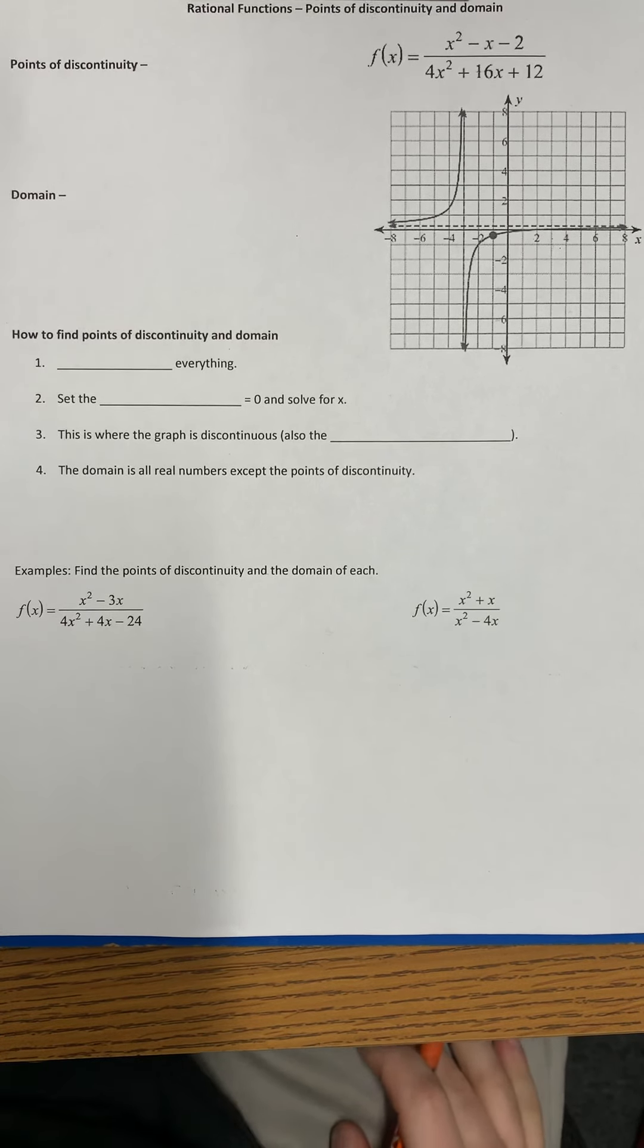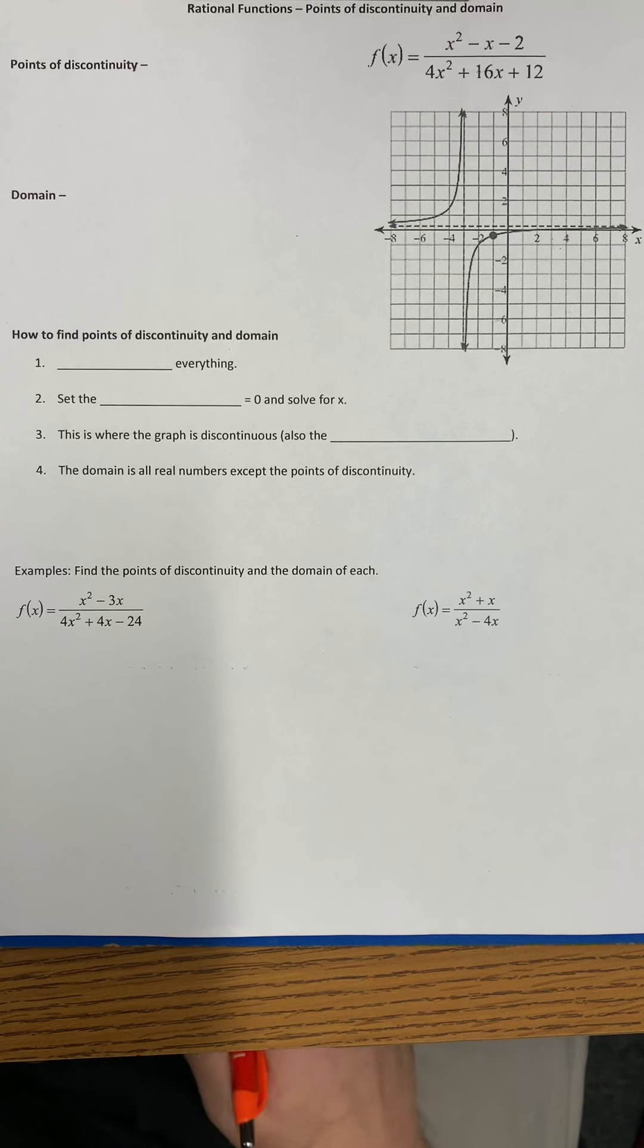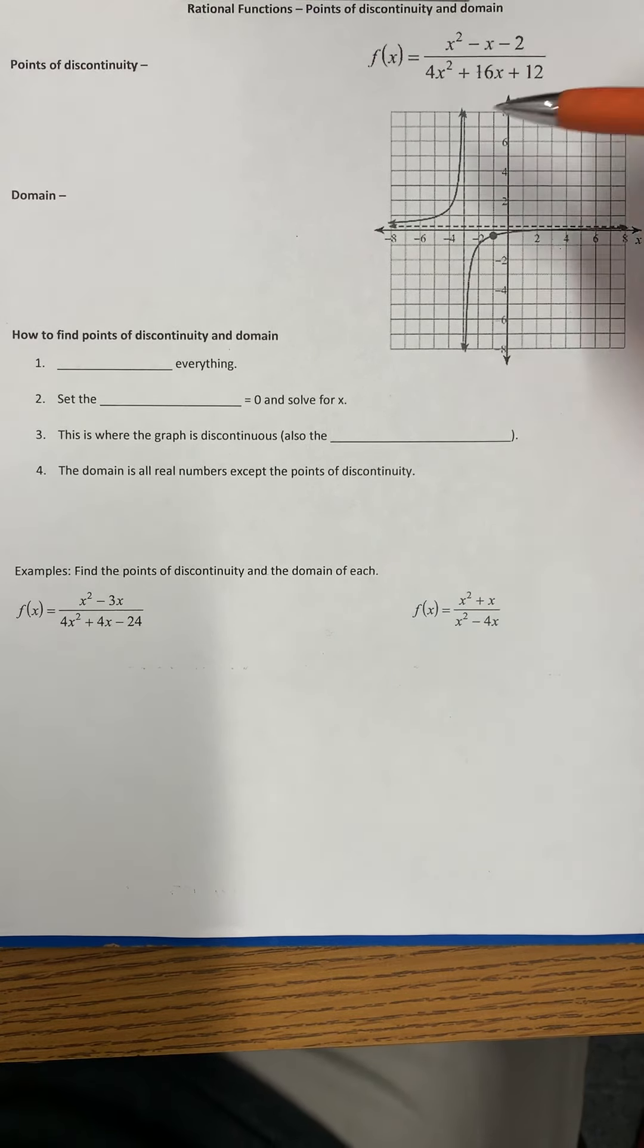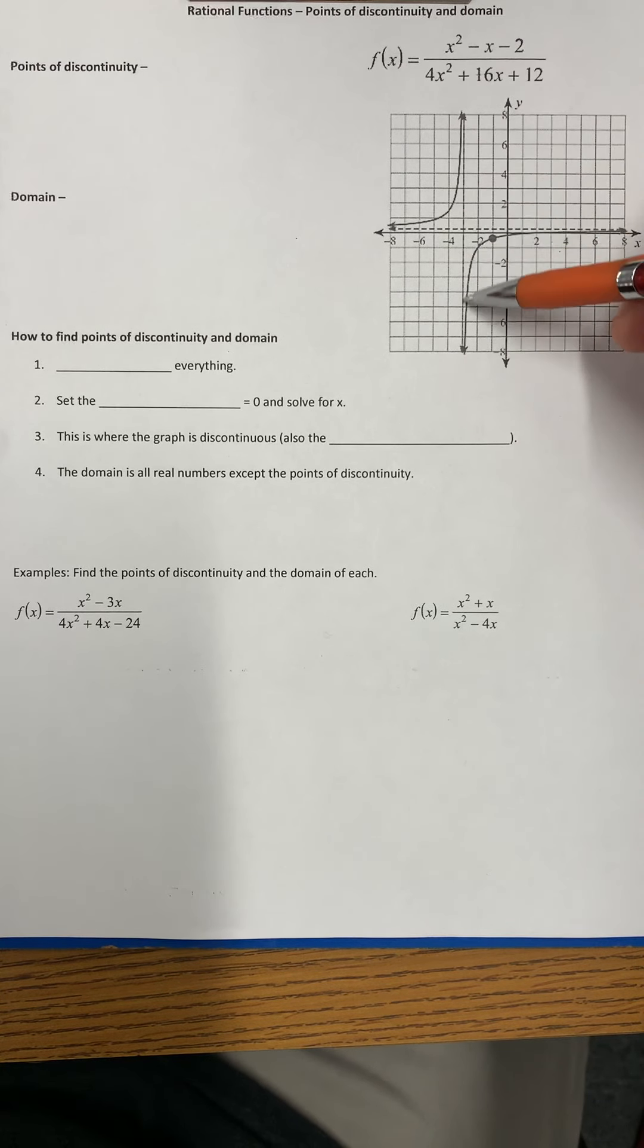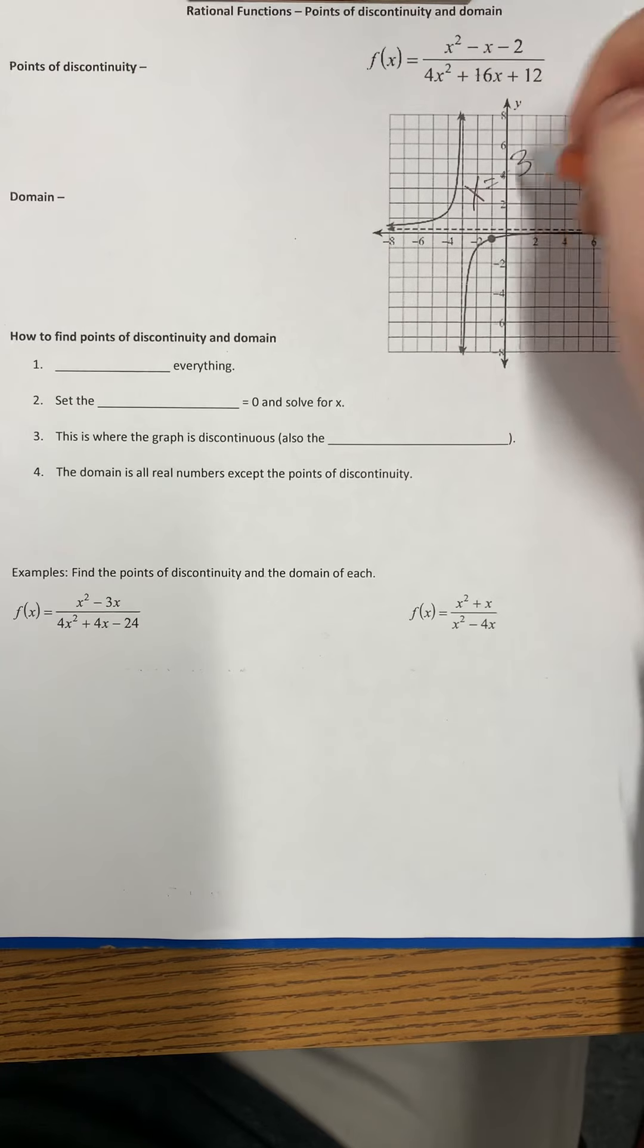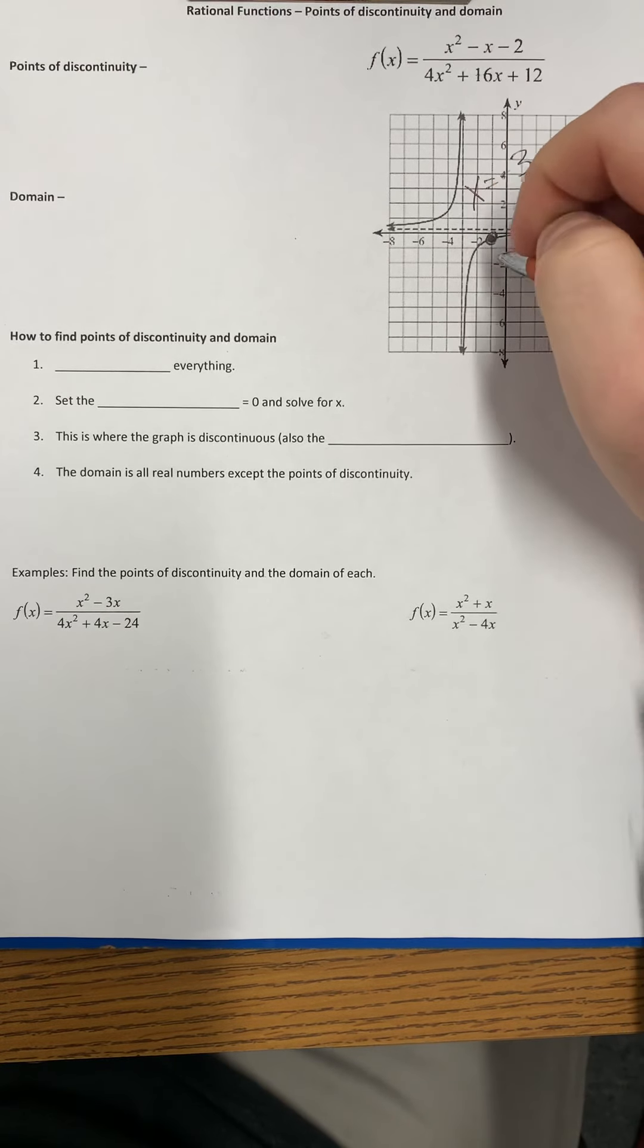Hi, in this video we're going to talk about points of discontinuity and domain of a rational function. If we look at this graph, this graph is broken in two places. It's broken right here at x equals negative three, and this right here is an open dot.